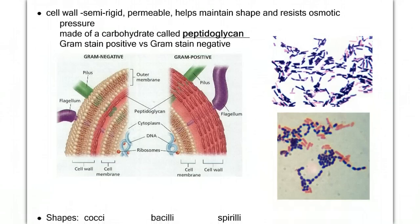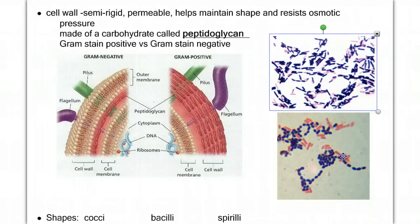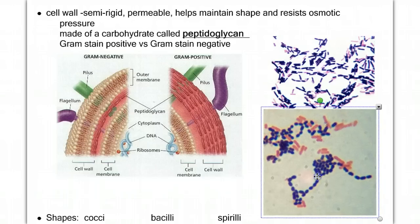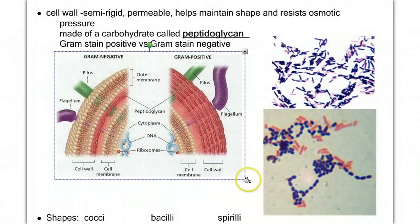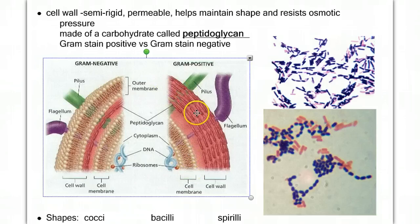One way to differentiate between broad groups of bacteria is whether they are gram stain positive or gram stain negative. The gram stain is a chemical stain applied to a sample of bacteria. Gram stain positive bacteria show up dark purple, while gram stain negative bacteria show up pink. The reason they stain differently has to do with structural differences in their cell membrane and cell wall. Gram-negative bacteria have a cell membrane, a thin cell wall, and then another membrane on the outside, whereas gram-positive bacteria have a cell membrane and a thicker cell wall.